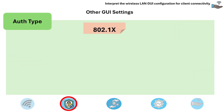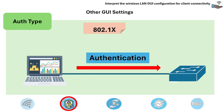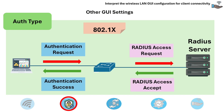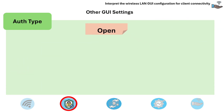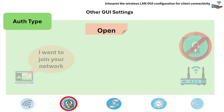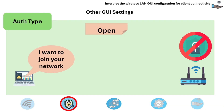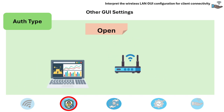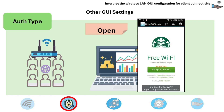Next is 802.1X, a port-based authentication protocol that provides stronger security by verifying each user's identity before granting network access. It often involves a RADIUS server and can use various authentication methods like usernames and passwords, certificates, or token cards. Open authentication provides no security — any device can connect without needing to authenticate, and is typically found in public hotspots where users may be redirected to a captive portal for web-based authentication.